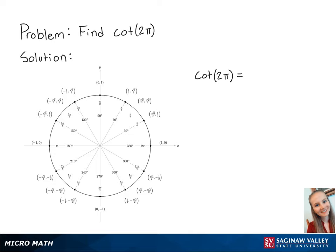For this problem, we're going to find cotangent of 2π. Cotangent of 2π is equal to cosine of 2π over sine of 2π. Looking at the unit circle, we can see that 2π lies here. Cosine correlates to the x-coordinate on the unit circle, so cosine of 2π is equal to 1.